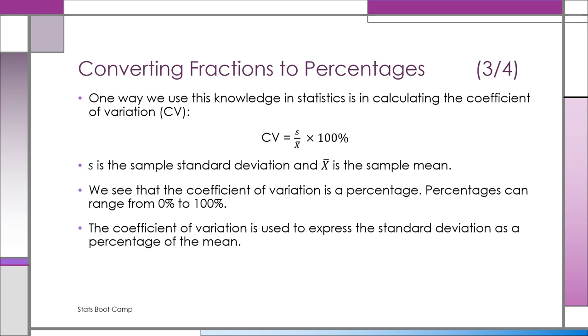What we're doing is eliminating the units. The standard deviation and the mean are both in the same units as the original data. When we take the standard deviation over the mean as a fraction, we cancel the units, giving us a pure number. We multiply it by 100%, and that's the coefficient of variation.